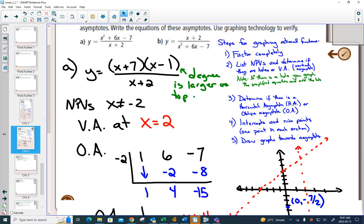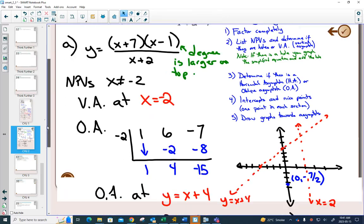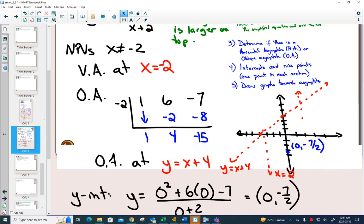Alright, we found our mistake. It was just small. What was our non-permissible value? x can't equal negative 2. So then our vertical asymptote should be at x equals negative 2. See how we just forgot that negative? So I've got to go to my graph. I need to move my dotted line over to x equals negative 2.